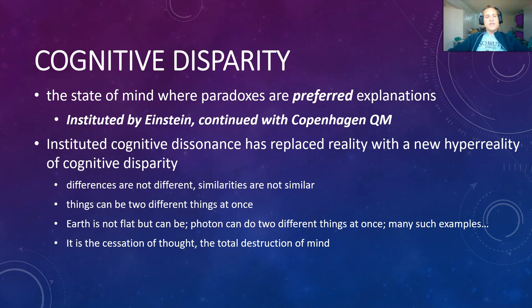Instituted cognitive dissonance has replaced reality with a new hyperreality of cognitive disparity, where differences are no longer different and similarities are no longer similar. Basically, the ability for the mind to discriminate has been removed. Discrimination — just in its definition of being able to tell one thing separately from another — that's the base human mind. Even animals need to do that for food and basic things. For humans, who are absolutely mental creatures, the ability to discriminate, to be able to tell one thing from another, to tell what's different and what's the same, is fundamental to our condition.